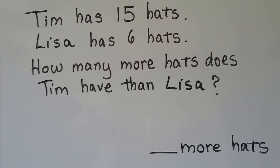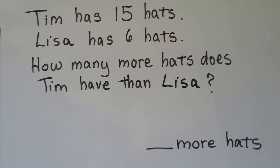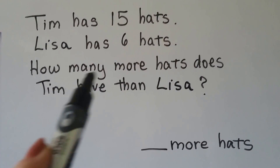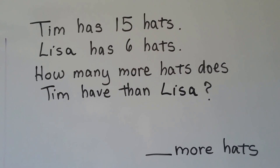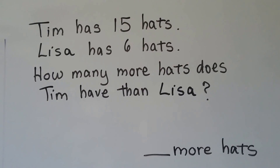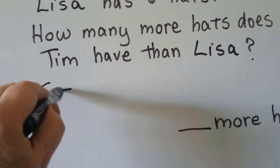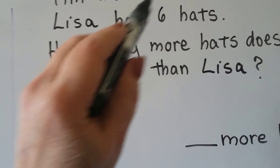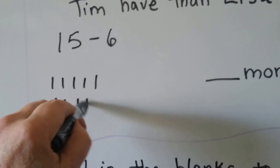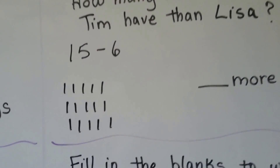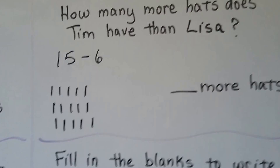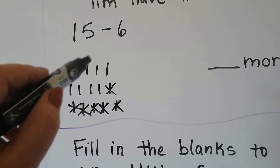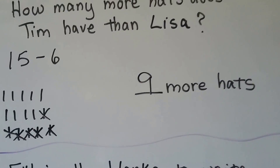Tim has 15 hats. Lisa has 6 hats. How many more hats does Tim have than Lisa? We need to find the difference between 15 and 6, so our subtraction sentence is 15 minus 6. We can make lines to represent 15 hats and cross off 6: 1, 2, 3, 4, 5, 6. How many are left? 1, 2, 3, 4, 5, 6, 7, 8, 9. Tim has 9 more hats than Lisa.